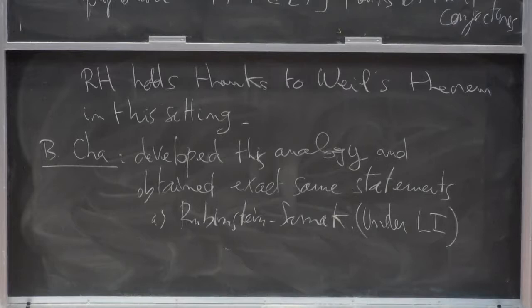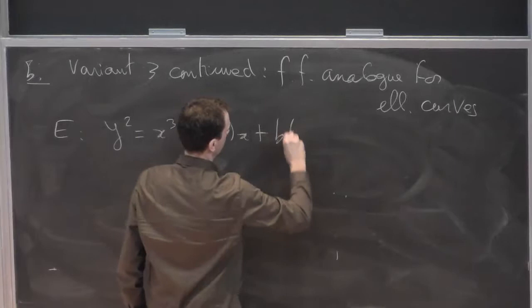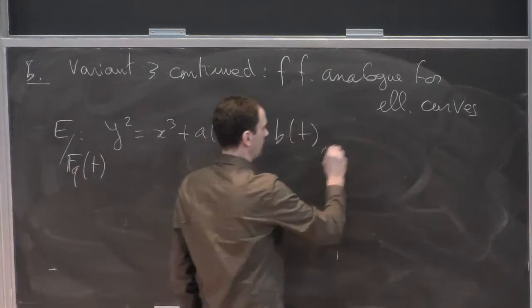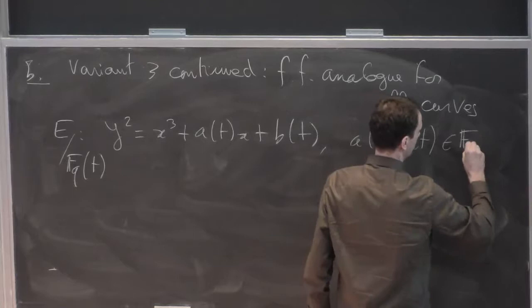And so let me finish by mentioning function field analog to elliptic curves. So again, start with an elliptic curve y squared equals x cubed plus A(t)x plus B(t). And this time is going to be over F_q(t). A, B, polynomials.